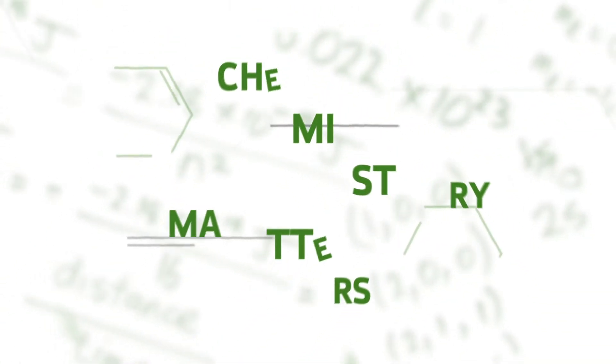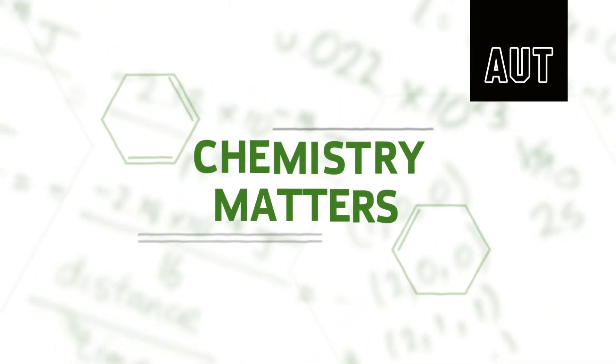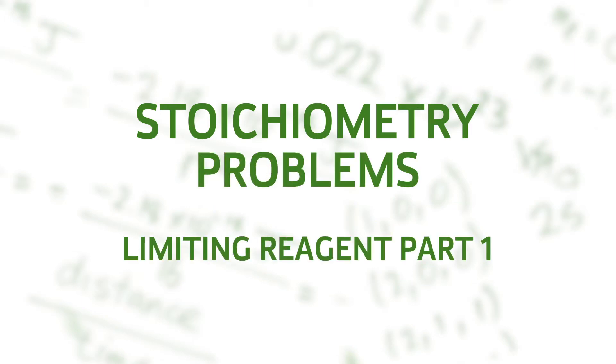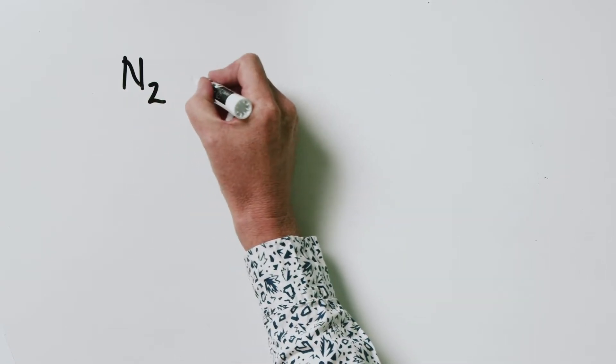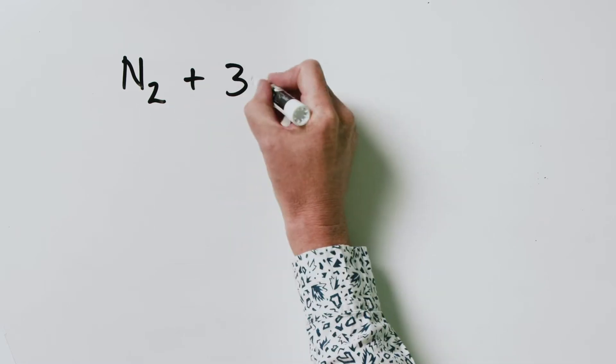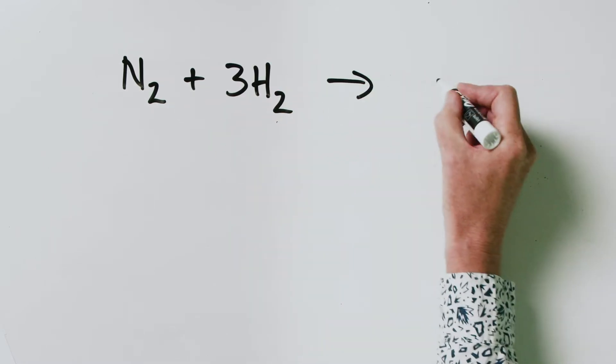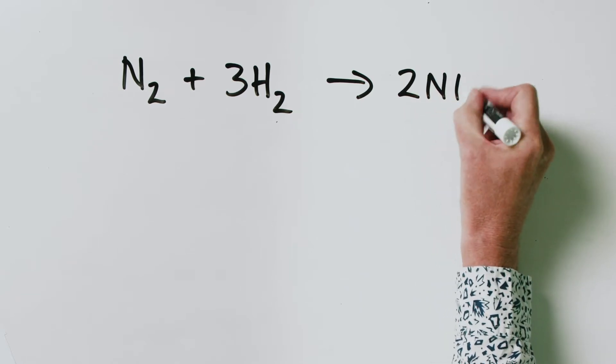Hi, I'm Prof. L, and welcome to Chemistry Matters. Today we are going to look at the stoichiometric concept of the limiting reagent. Something that in my experience a lot of students have problems with. Without further ado, let's look at an equation we have used in other videos in this series: the reaction of nitrogen with hydrogen to give ammonia.